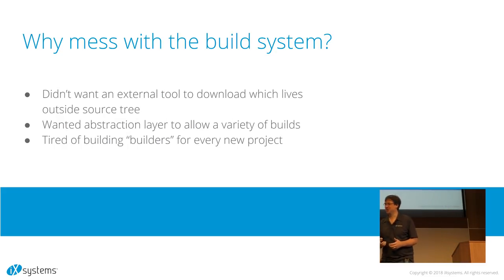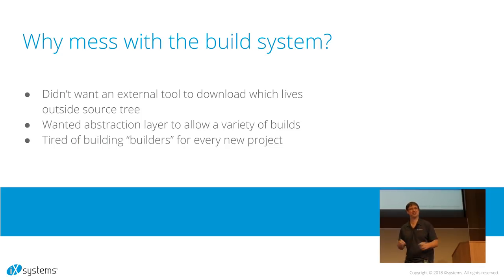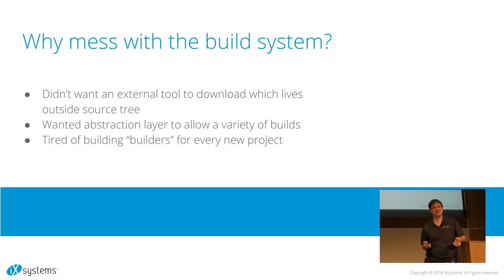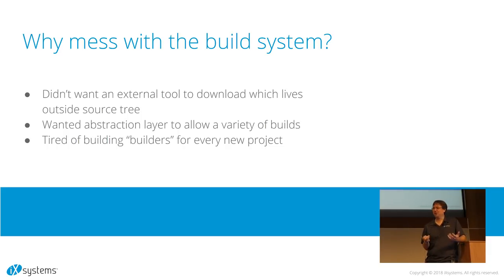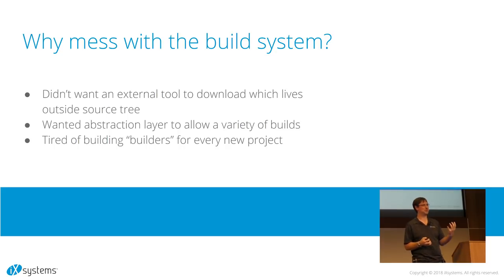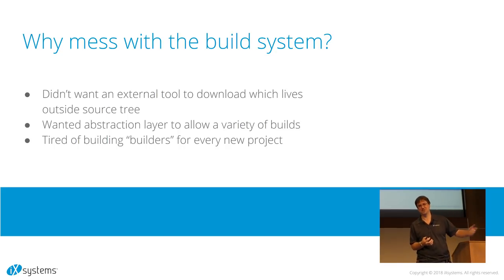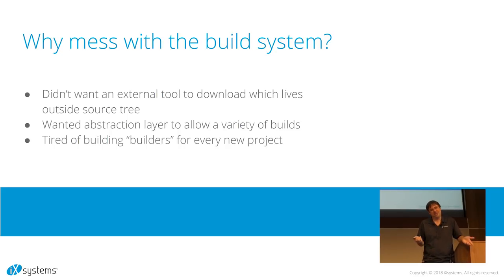One thing we didn't want is another external build system that lives outside the source tree — this weird monstrosity that somebody has to maintain, and inevitably it falls to the least lucky guy on the team. We wanted something a little more built in. And if we're going to do a build system again, why not do something more abstract that we could use amongst all the different IX projects — FreeNAS, GhostBSD, Trident, and even a TrueOS KDE5 version.